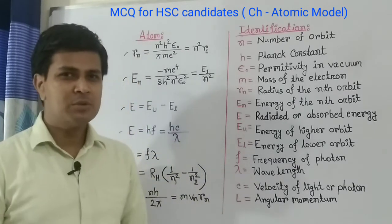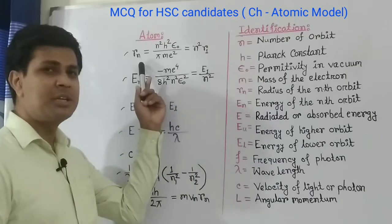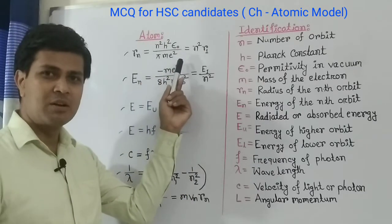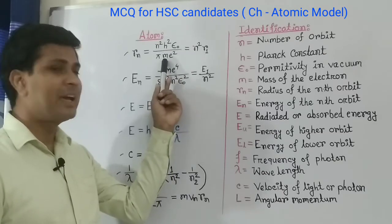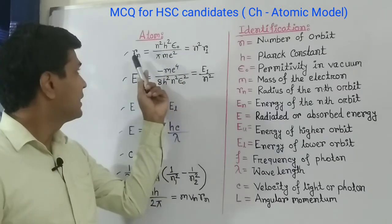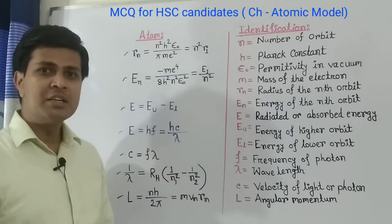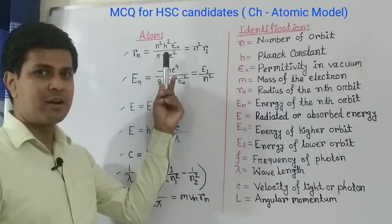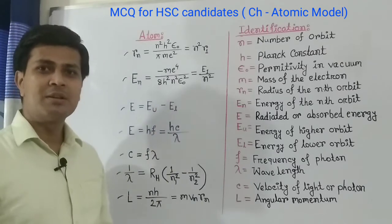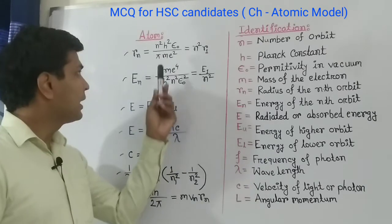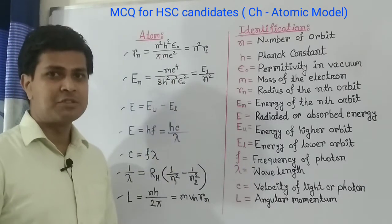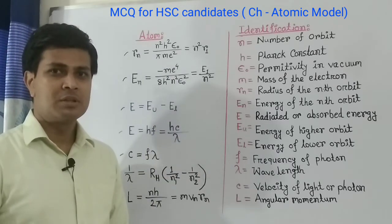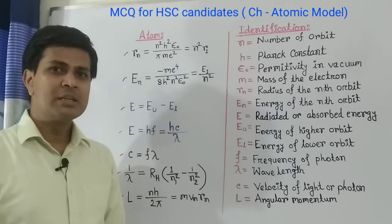The first formula is to calculate the radius of the nth orbit. The formula is rn equals to n squared h squared epsilon naught divided by pi m e squared. Here rn is the radius of the nth orbit, n is the number of orbit, h is the Planck constant, epsilon naught is the permittivity in vacuum, m is the mass of the electron, and e is the charge of electron.